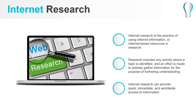Internet research can provide quick, immediate, and worldwide access to information, although results may be affected by unrecognized bias and it can be difficult to verify the writer's originality. The first resources retrieved may not be the most suitable to answer a particular question. Popularity is often a factor used in structuring internet search results, but popular information is not always the most correct or representative of the breadth of knowledge and opinion on a topic.